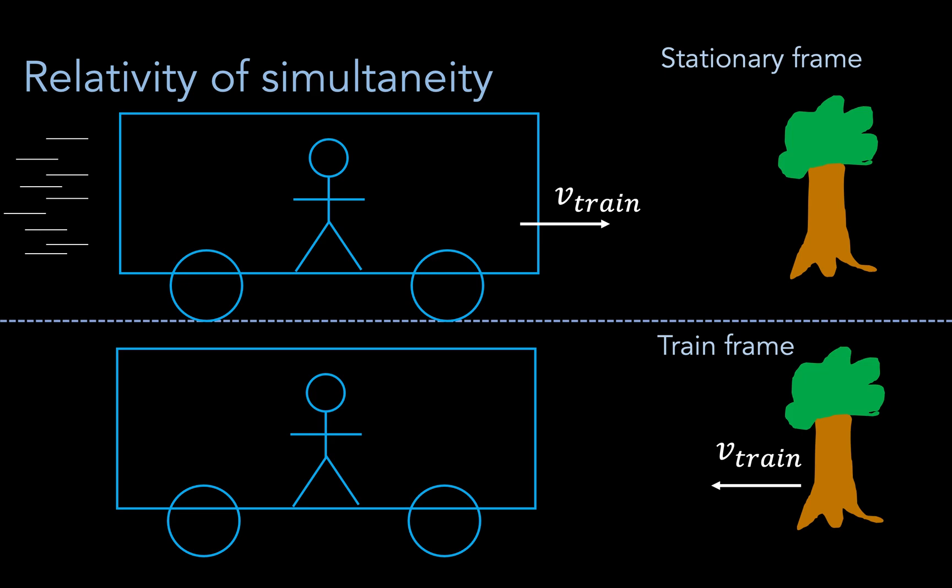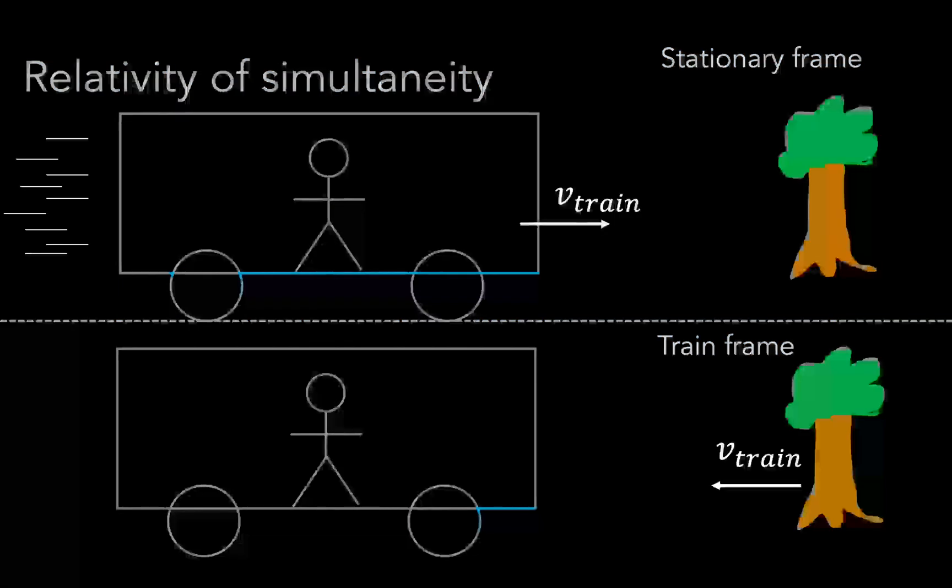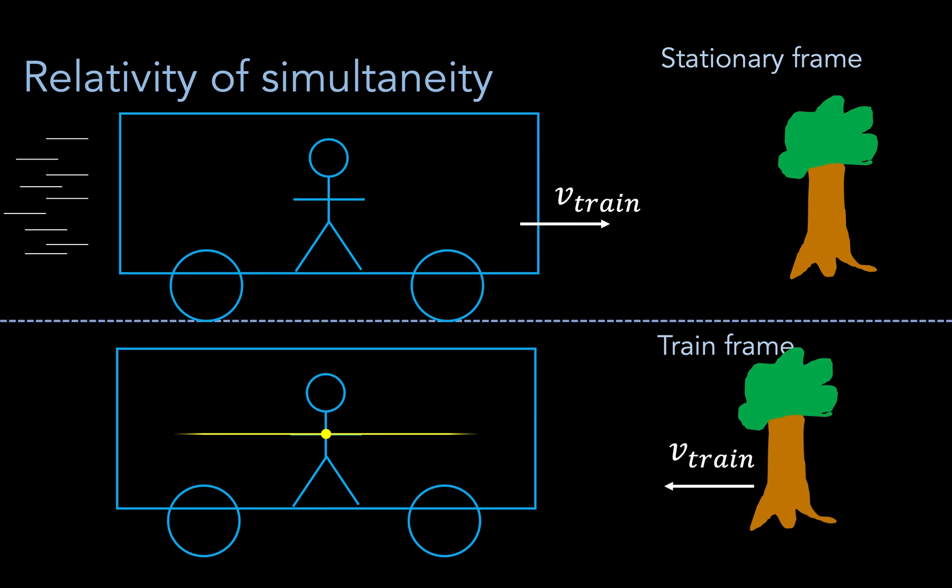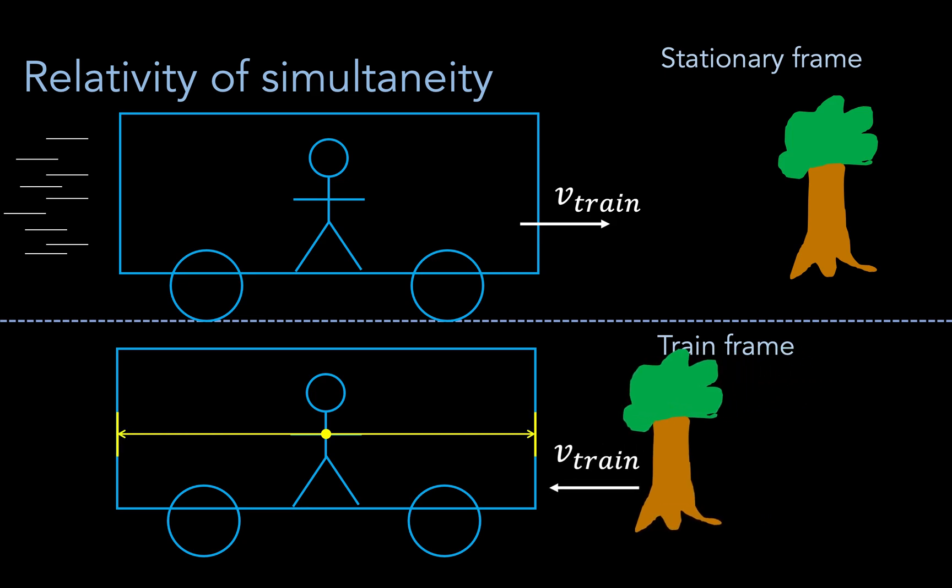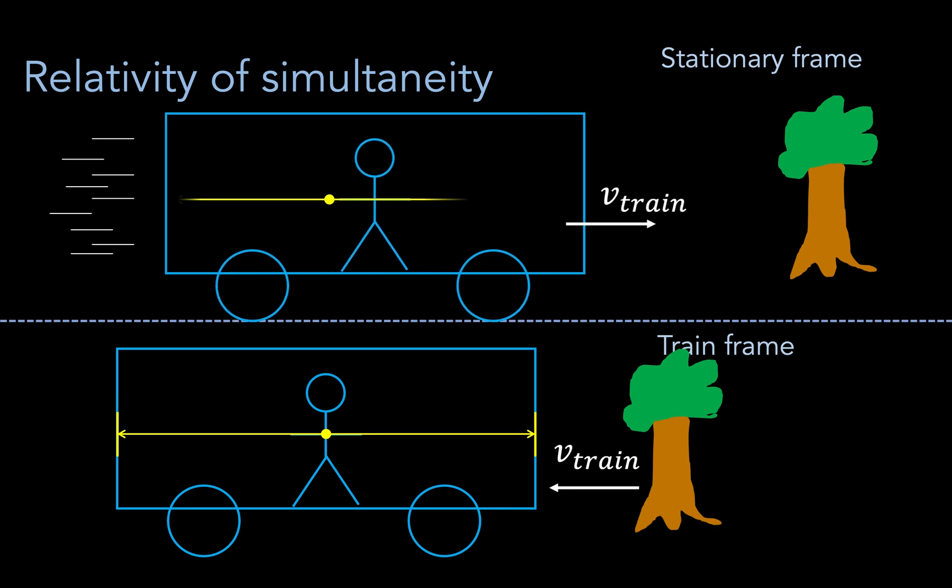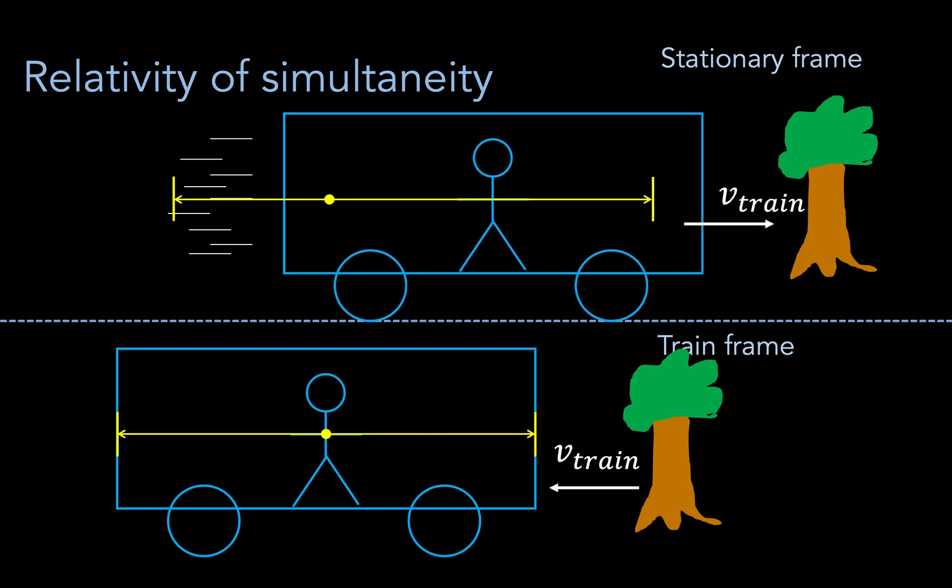Let's say we have some bioluminescent person in the middle of a moving train who emits light in both directions. An observer inside the train would say that the two light rays reach the opposite ends of the train at the same time. However, an observer outside the train would conclude that the light hits the back of the train before it hits the front of the train.